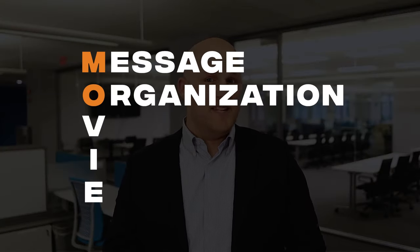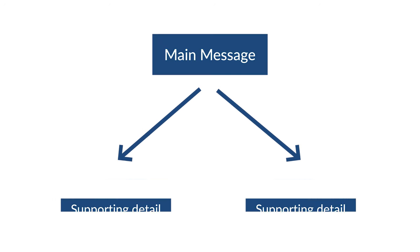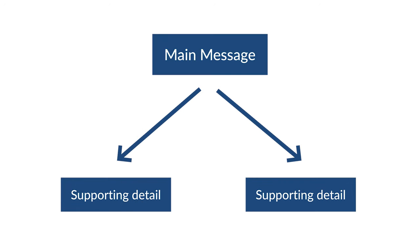Step number two in the MOVIE framework is to organize your information. Now that you've established the message for your slide, you can start organizing your data to support that message. This is going to make your slide more persuasive and help your audience understand how you've reached your conclusions. This is where the pyramid principle comes into play. Put simply, the pyramid principle is a method for communication where you start with your main message, then break that message down into its component parts. When you do it right, each statement provides a summary of all the statements below it.